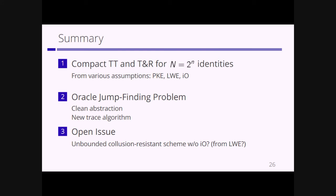Question: For the functional encryption, do you only need it for one query — not unbounded queries? Answer: It depends on what we achieve. If we need adaptive security, then we need adaptively secure functional encryption. If we achieve the bounded-collusion scheme, then we can use standard public-key encryption or bounded-collusion functional encryption.